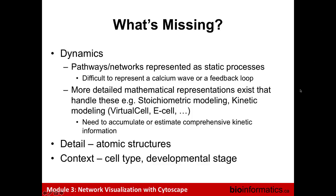It's difficult to represent things like a calcium wave on a neuron or a feedback loop with these systems. There are more detailed mathematical representations that can simulate processes, but people don't usually use them because they need very detailed information about rate constants and things like that — information we just don't have measured on most proteins. Networks also don't have a lot of detail. Usually a gene is represented as a node or a circle, but we know genes and proteins have structure.